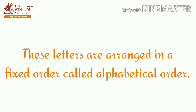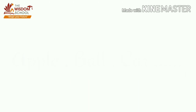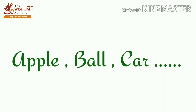In the dictionary too, words are arranged in a fixed order. For example, apple starts with A, so it comes first. Then comes B, as in ball. Then C, as in car. Words beginning with B come after those beginning with A, and so on.